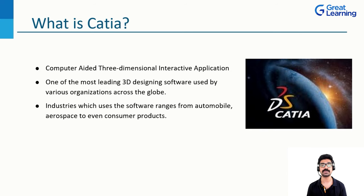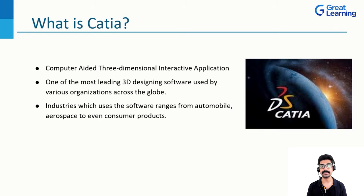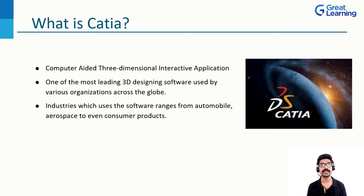CATIA is used across many areas — ranging from day-to-day products we see in our lives to highly sensitive products like aerospace and automobile industries. You can understand that it is a tool capable of implementing design for everyday products as well as performing complex designs incorporated in highly sensitive industries like aerospace, where complete accuracy and standards must be maintained. That kind of performance is delivered by CATIA — Computer-Aided Three-Dimensional Interactive Application.